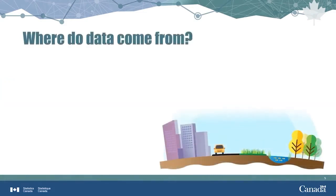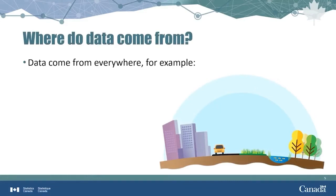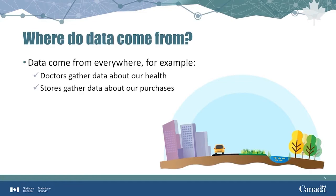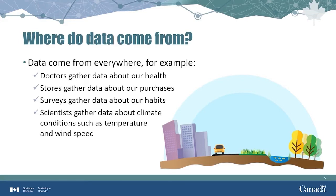Where do data come from? Data come from everywhere. For example, doctors gather data about our health and well-being. Stores gather data about our purchases. Surveys gather data about our habits. And scientists gather data about climate conditions, such as temperature and wind speed. This is sometimes referred to as Earth observation data.